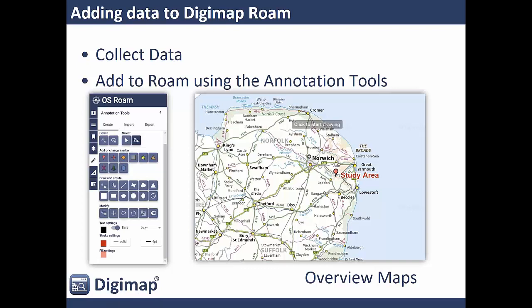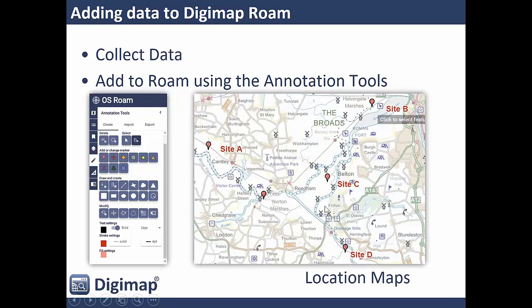Once you've been out into the field and collected your data, you can use the annotation tools in Roam to print out an overview map. You can mark on your study area using point features — these sort of markers — or use the draw and create tools to mark on areas and label them. This gives a good example of an overview map showing the area in the wider context of East Anglia.